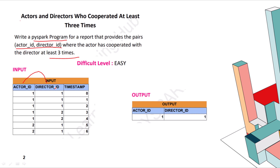So if any actor and director pair appears three times, then we want to see that in the output. As we can see, actor ID 1 and director ID 1 is coming three times, so it appears in the output. Actor 2 and director 2 appears only two times, so it does not appear in the output. The difficulty level of this is easy, so you can pause and think about it.